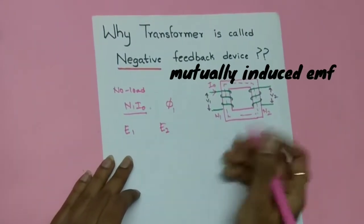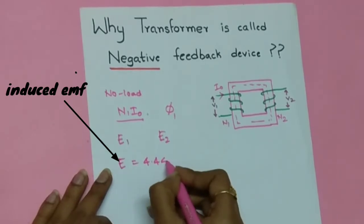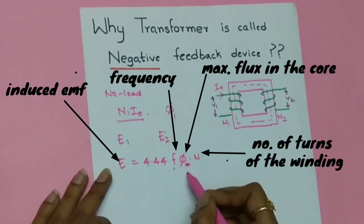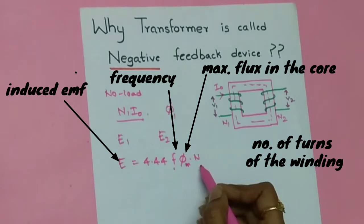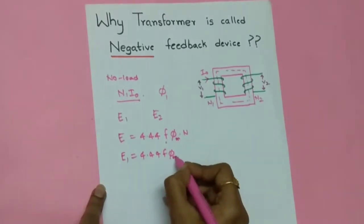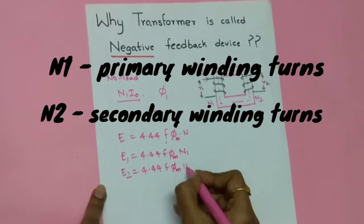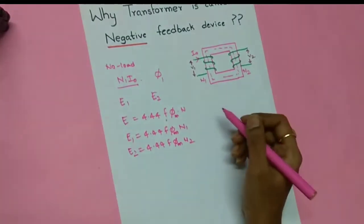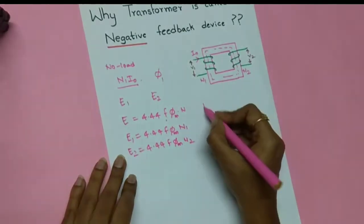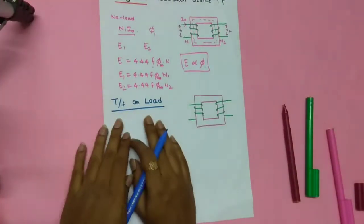Since this flux links with both the primary and secondary windings, an EMF e2 is also produced in the secondary winding. The formula is: e = 4.44 × f × φm × N, where f is frequency, φm is maximum flux, and N is number of turns. So e1 = 4.44·f·φm·N1 and e2 = 4.44·f·φm·N2. For a fixed frequency and fixed turns, the EMF e is directly proportional to the flux.